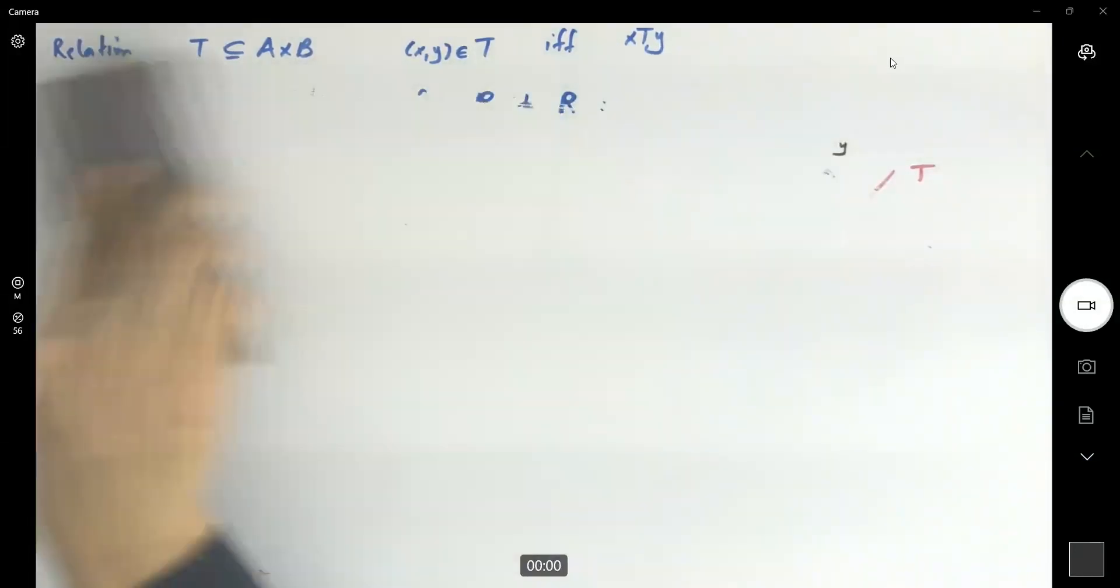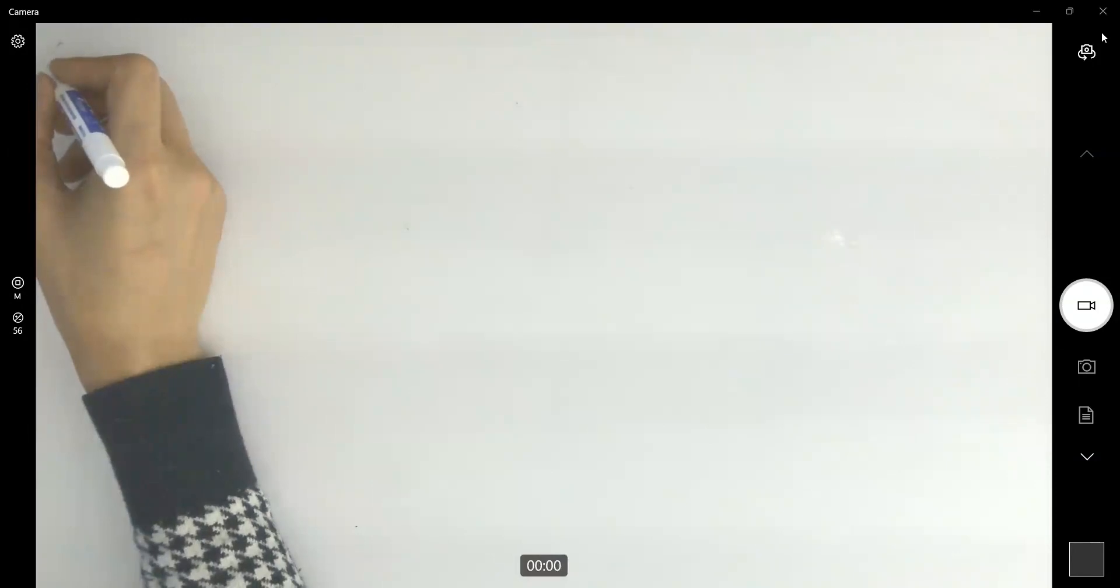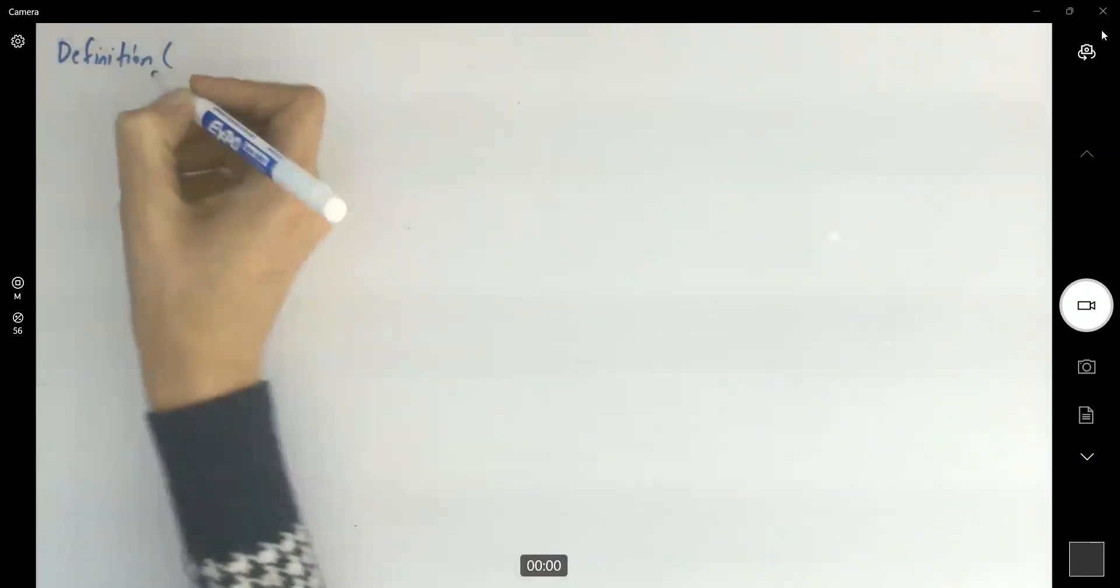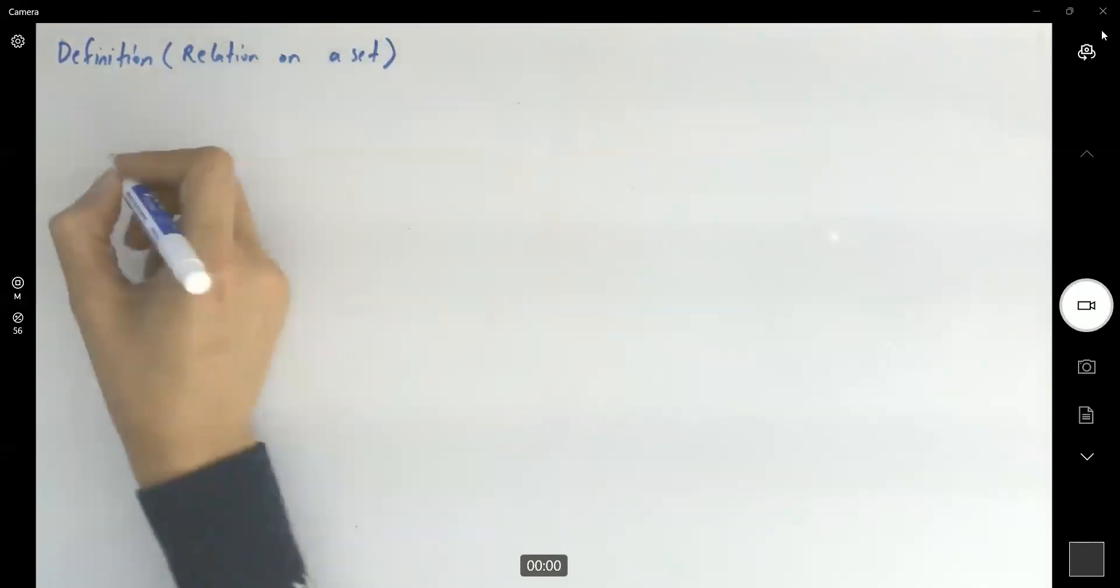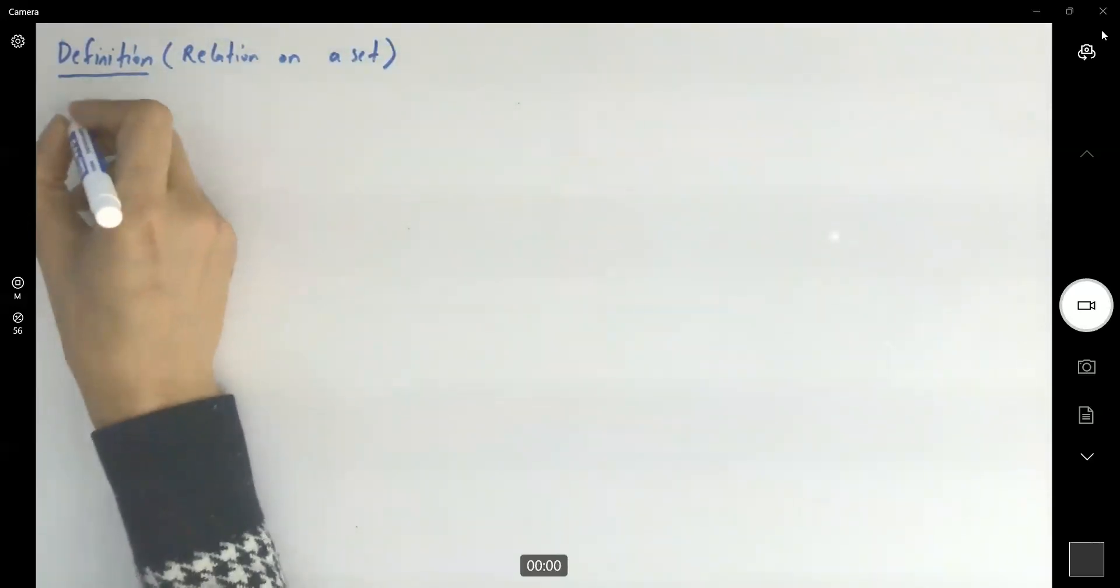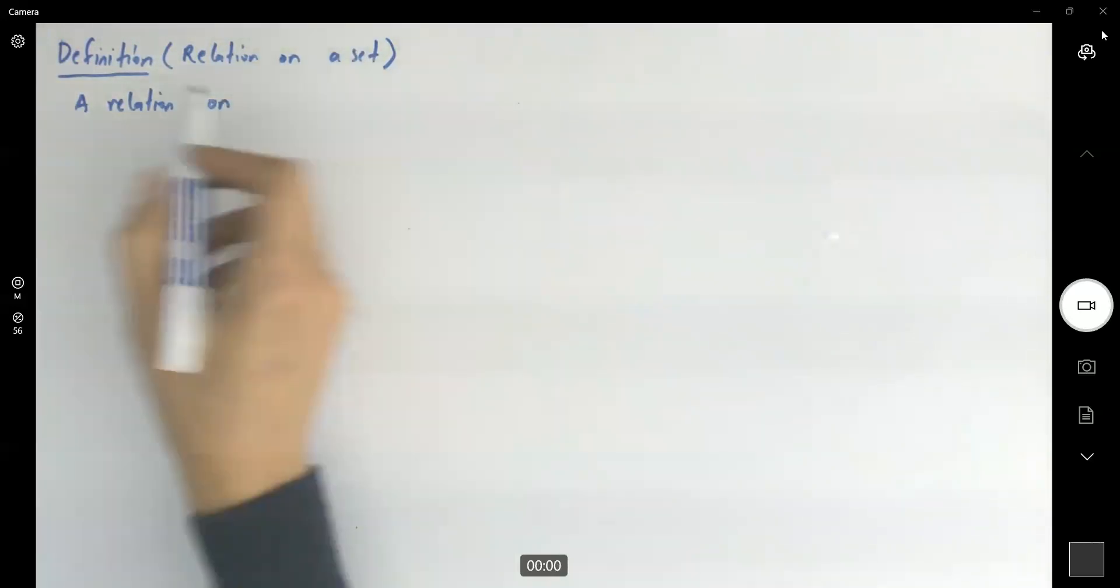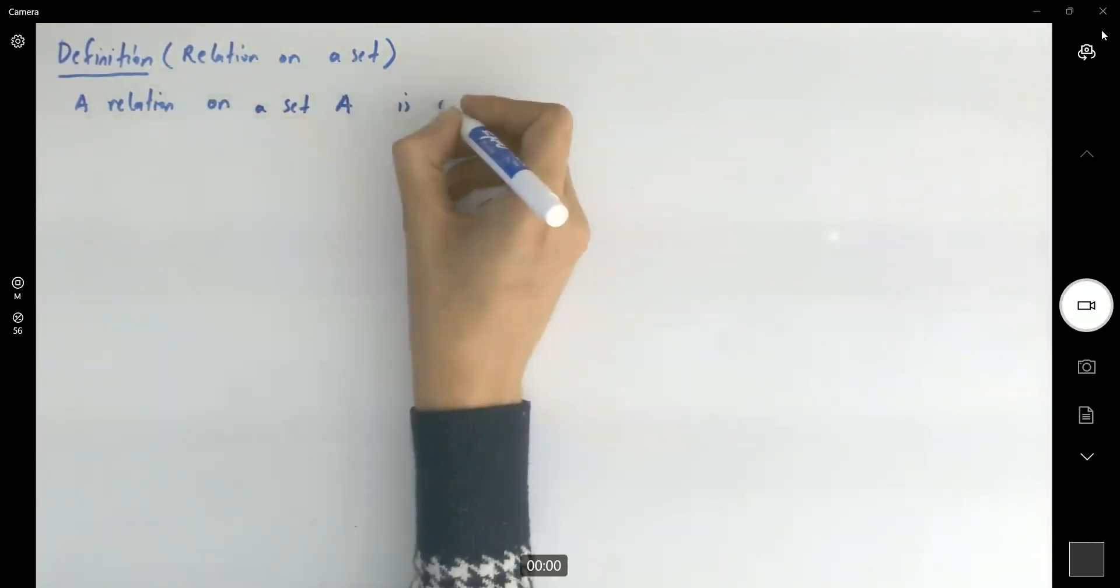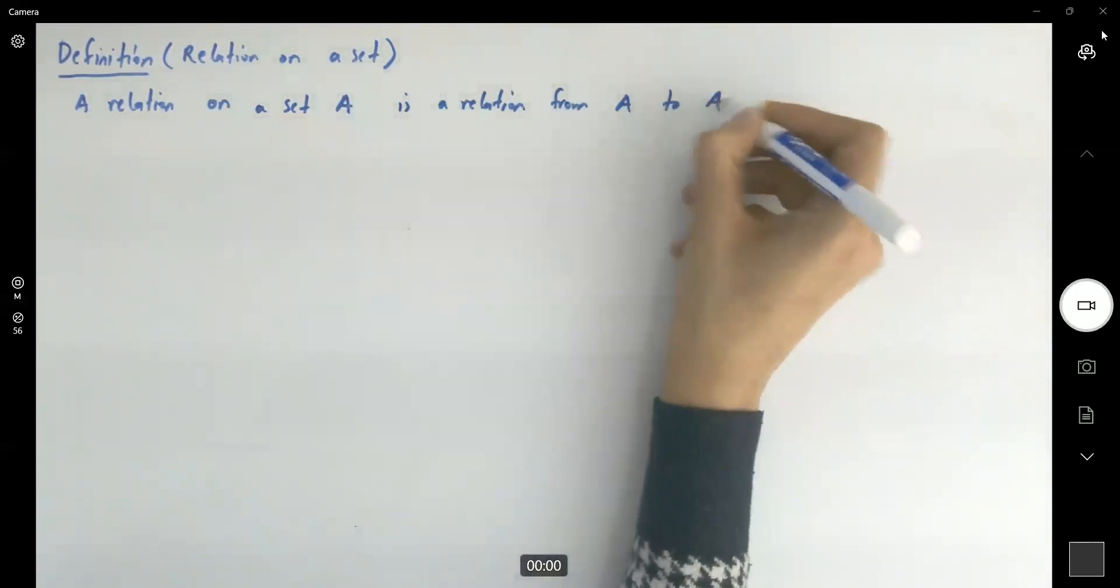Very well, so let's talk about directed graph. First of all, let's write down this short definition. A relation on a set A is a relation from A to itself, to A.